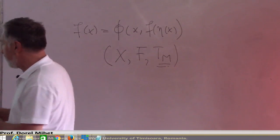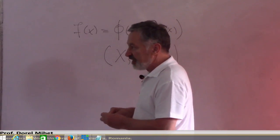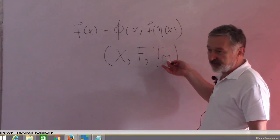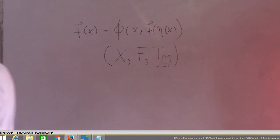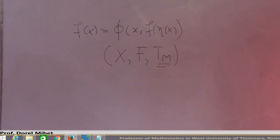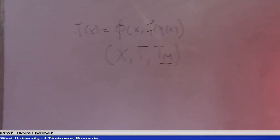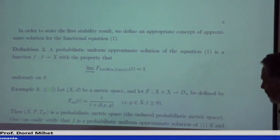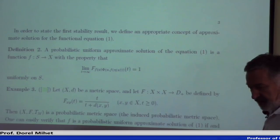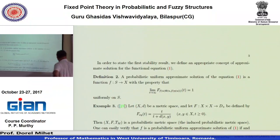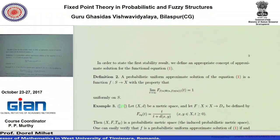Here is a result on the stability of this equation in complete polaristic symmetric spaces under a T-norm of Huggish type. You need complete polaristic symmetric spaces for proving the stability, and as in the preceding example, you need the definition of a uniform approximate solution. After that, you see how stability results hold in these spaces.